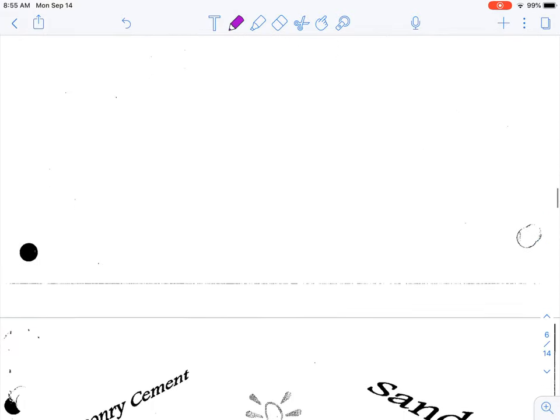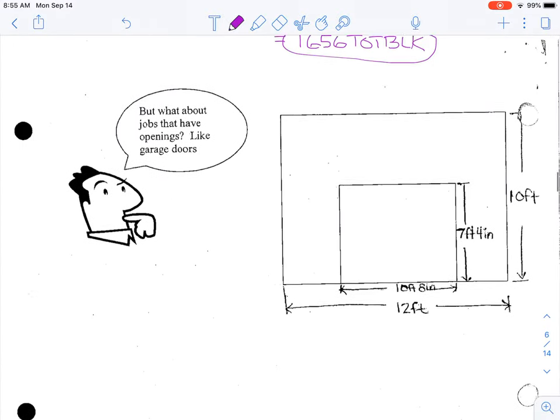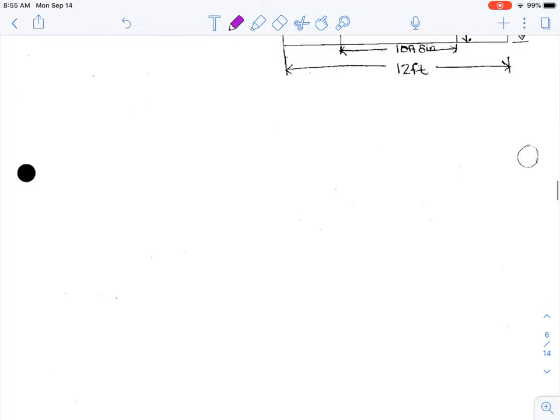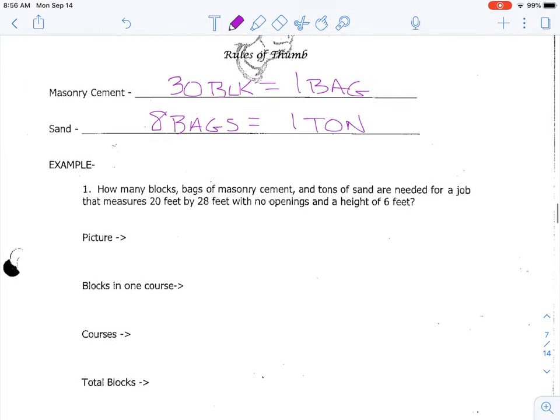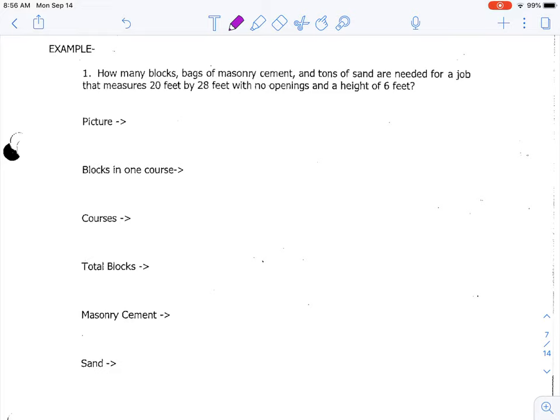I want to pass over this example here about openings and the garage door and talk about masonry cement and sand. So we used a rule of thumb with brick, but with block it's different. For every 30 blocks, we will need one bag of masonry cement or mortar. And then for tons of sand, it's the same as before. Every eight bags will need one ton of sand. So I want to do one more example, taking you the whole way through the process.